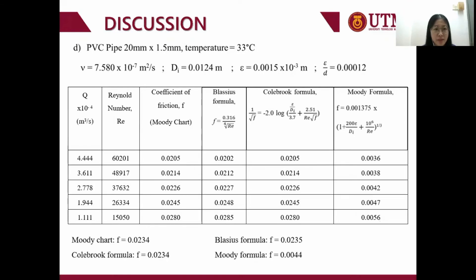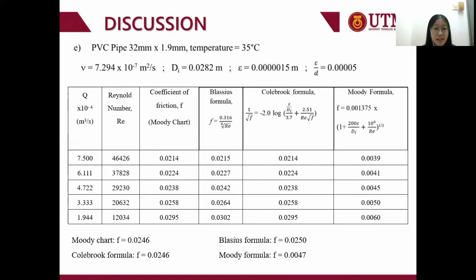Next is the PVC pipe with dimensions 20 mm × 1.5 mm. The coefficient of friction from the Moody chart is 0.0234. The Colebrook formula gives the same value of 0.0234. The Blasius formula gives 0.0235, and the Moody formula gives 0.0044.